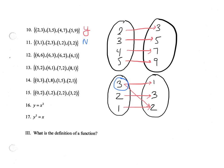Number twelve, notice six is corresponding to multiple values in the range. So this is a no. Thirteen, we're okay, this is a yes. Fourteen is a no. And fifteen is a yes.